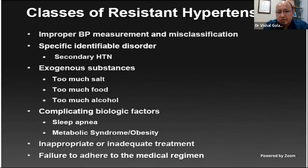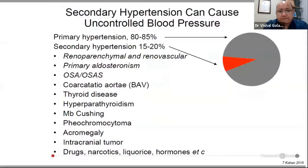The main reason for non-compliance is often cost or side effects not explained by the treating physician, causing patients to drop medicines. Before defining resistant hypertension, we should rule out these causes. We know that 80 to 85 percent of hypertension across all ages — especially the elderly — is primary. Secondary hypertension is less common; common causes include renal parenchymal disease, and chronic kidney disease remains one of the most common causes of secondary hypertension, with many of these cases tending to be resistant.